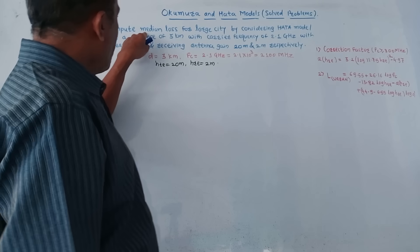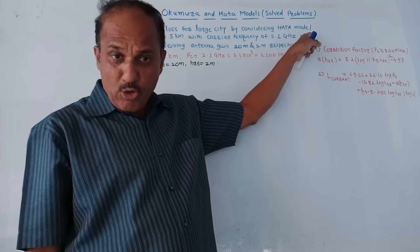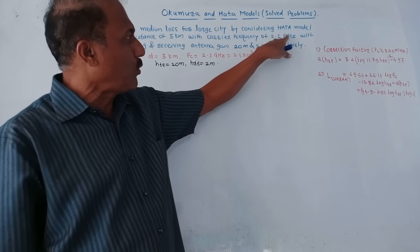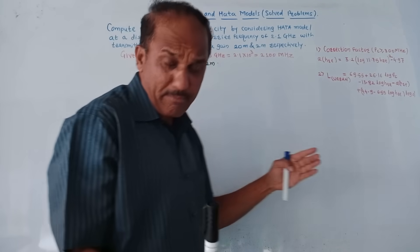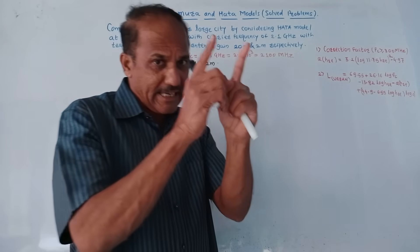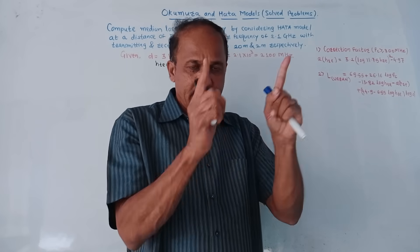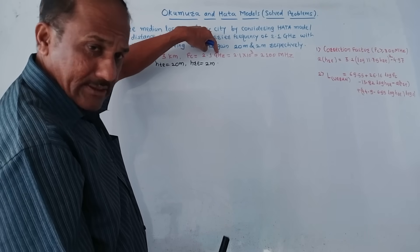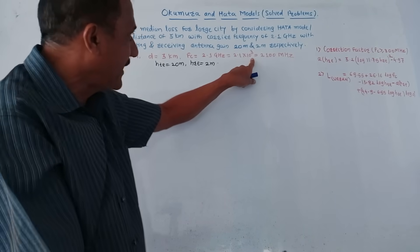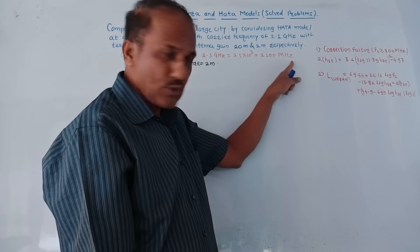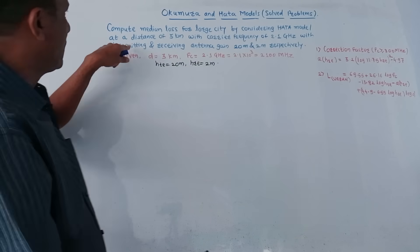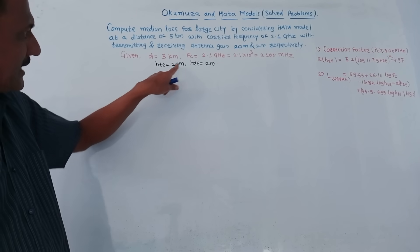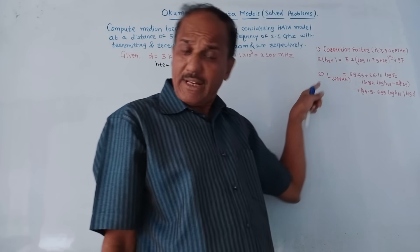Next problem: compute median loss for a large city using the Hata model at a distance of 3 km, with carrier frequency 2.1 GHz, and transmitting/receiving antenna heights of 20 m and 2 m respectively. In the Hata model, you must convert frequency to megahertz: 2.1 GHz = 2100 MHz.